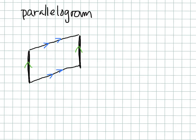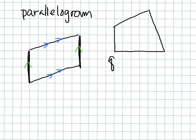If I wanted to create just any old quadrilateral on my rectangular grid paper, I can do that. I can go here, up three, here, and here. Now I have a quadrilateral — just four sides, no sets of parallel lines. So that's called a quadrilateral.